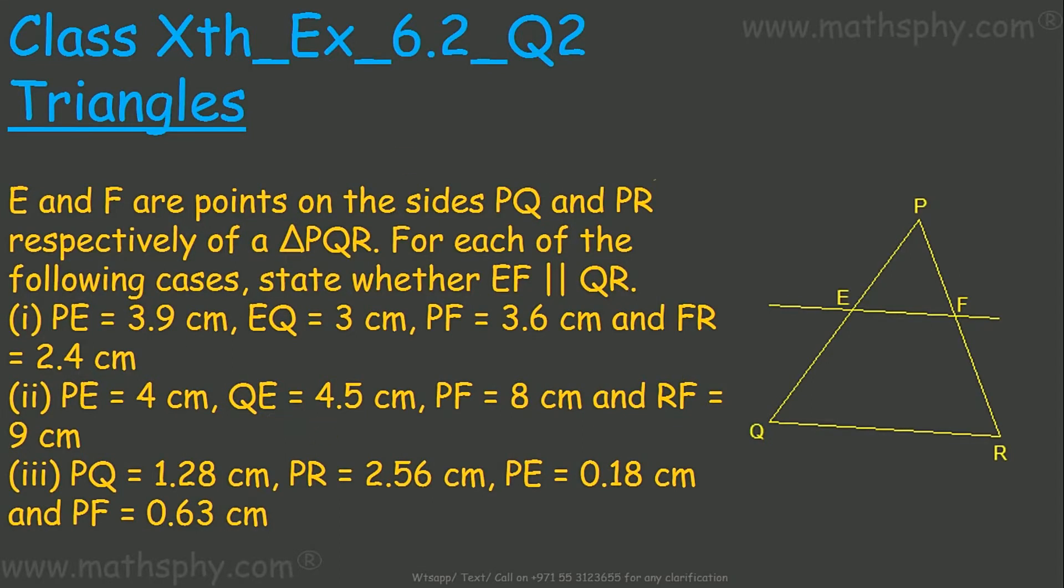This question says E and F are points on the sides PQ and PR. E and F are the points on sides PQ and PR for triangle PQR.